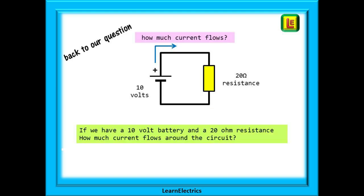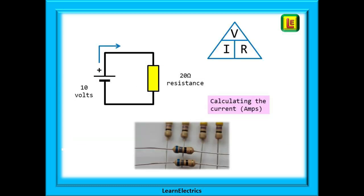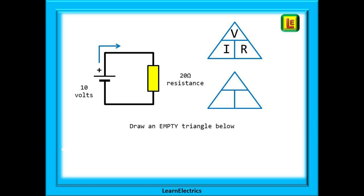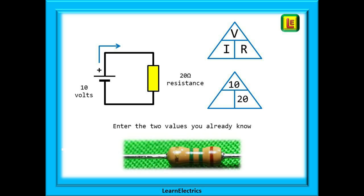So go back to our question: how much current flows around a circuit with a 10 volt battery and a 20 ohm resistance. Start by drawing the Ohm's law triangle. This is exactly how I do it even today. Now draw an empty triangle below. Into the empty triangle write what you know in the correct position. We know the voltage, 10 volts. We know the resistance, 20 ohms.